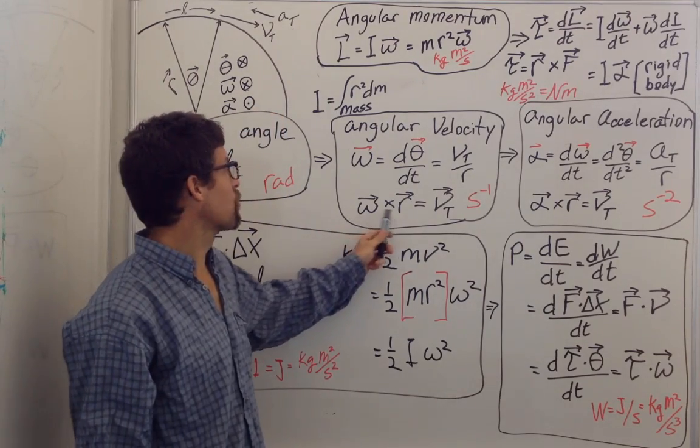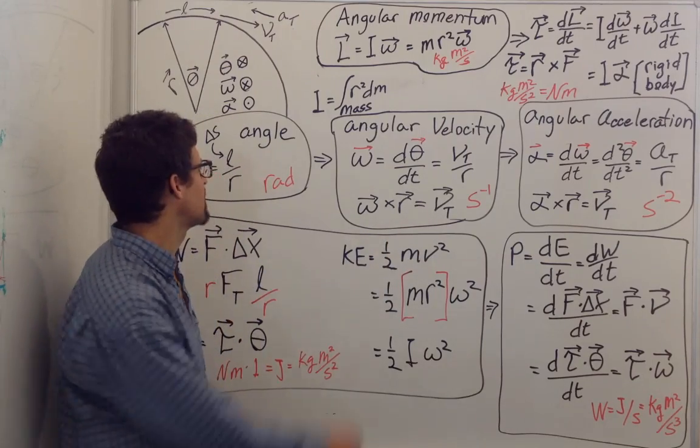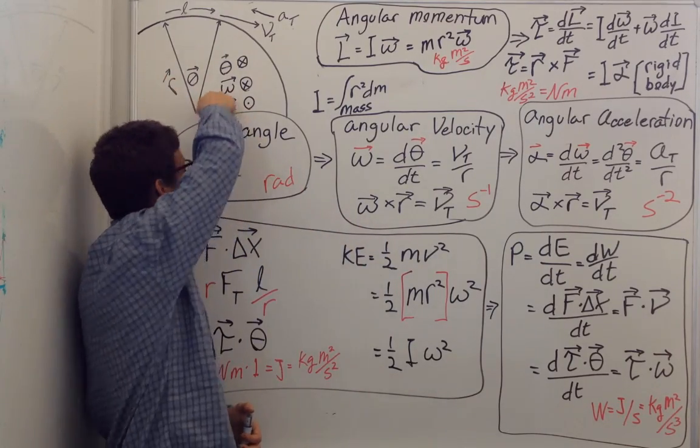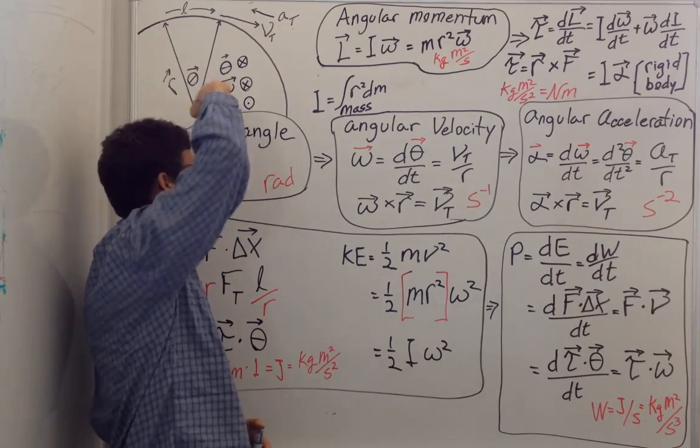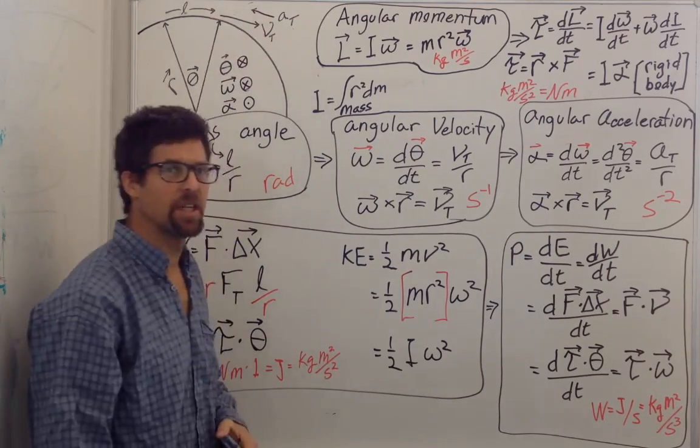The directions can be found from this cross product. Omega cross the radius is tangential velocity. Let's try that. In this example, omega is into the board. So omega into the board cross the radius gives you tangential velocity.